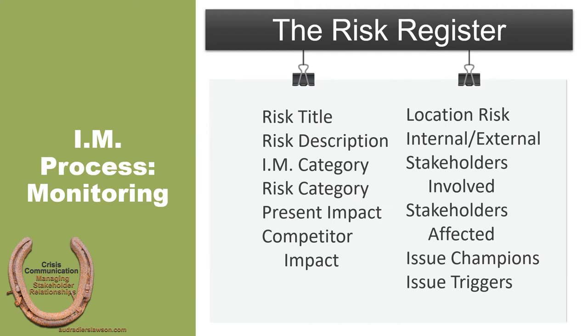First, we'll start with the title. You provide a brief name — a one to three word summary about the specific risk. For example, if you're in the fashion industry, one risk would be supplier factory safety. Second, provide a risk description. In about a sentence or phrase, you'd provide a brief description of the risk to clarify exactly what you meant by the title. So if we stick with the fashion industry and supplier factory safety, the description might be the safety of buildings used in textile factories in Southeast Asia. Third, issue management category. Here you would identify any of the four categories that could be affected, including social, economic, political, and competitor.